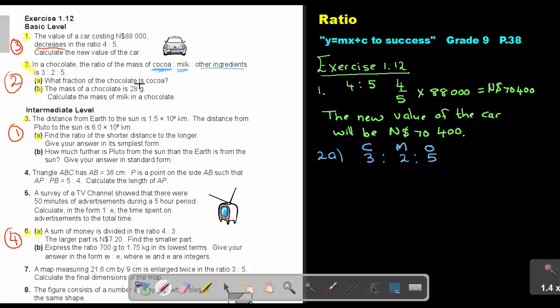What fraction of the chocolate is cocoa? So, if I look at, first, I must add it. So, it's 3 plus 2 plus 5, and that will give me 10. So, if I must say, what is the fraction of cocoa, then it will be that first one over 10. Just that. They just want the fraction.